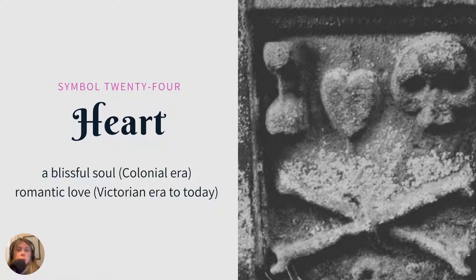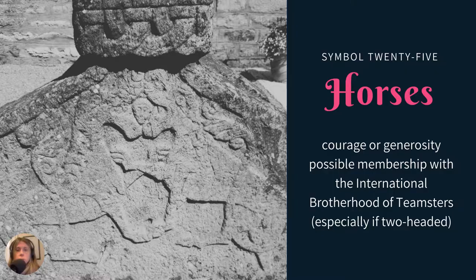A heart — this photo is of an 18th-century box tombstone. As you see from left to right, we have an hourglass, a heart, a skull, and then the crossbones at the bottom. The heart could represent a blissful soul, which was more common in the colonial era, or romantic love, which spans the Victorian era up until today.